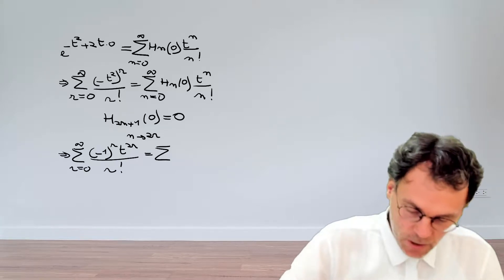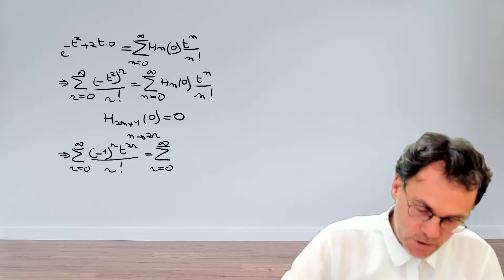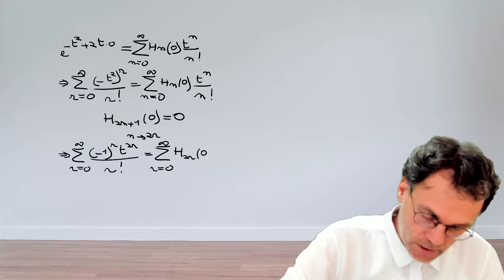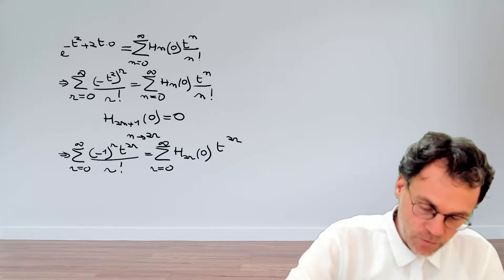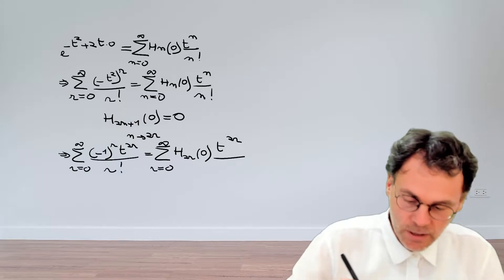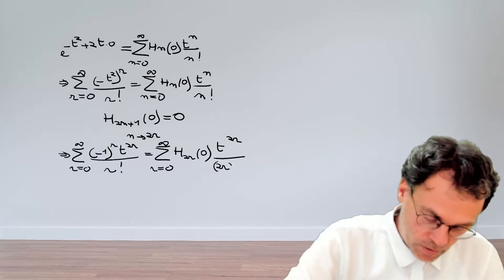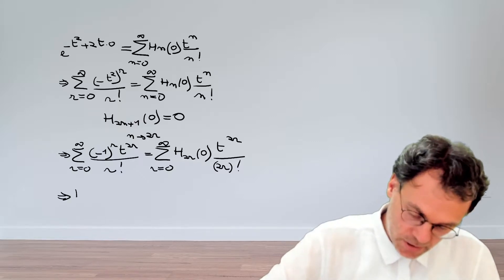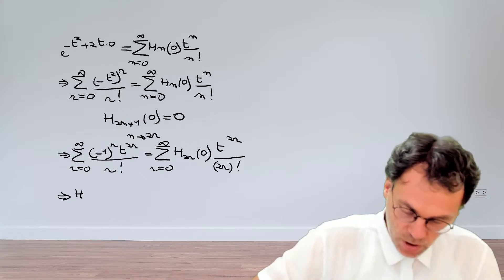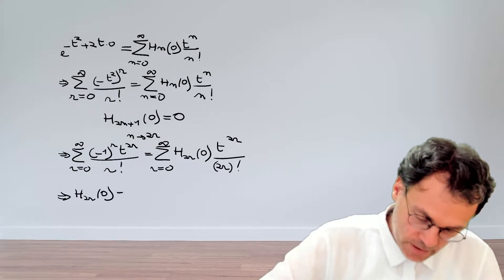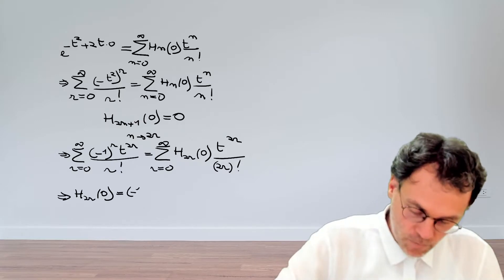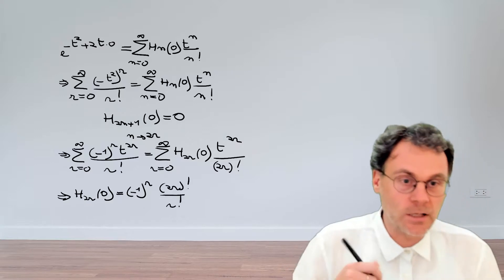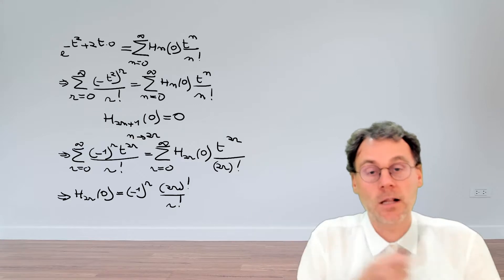Then for the right-hand side, also here, r will go from 0 to infinity. And Hn becomes H(2r) at the origin, t to the power of 2r, divided by 2r factorial. And now it becomes pretty obvious that the coefficient H(2r) evaluated at the origin is equal to minus 1 to the power of r, 2r factorial, divided by r factorial. And that's exactly what we needed to show.